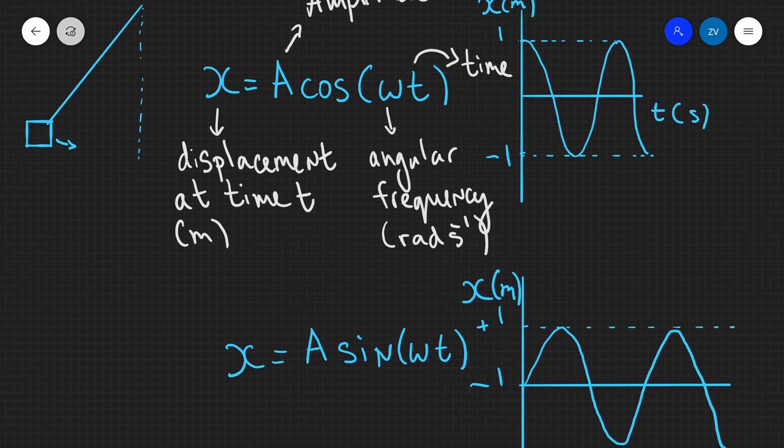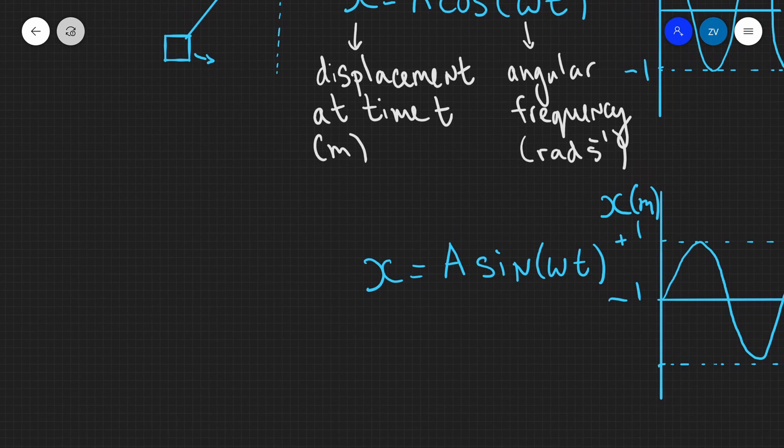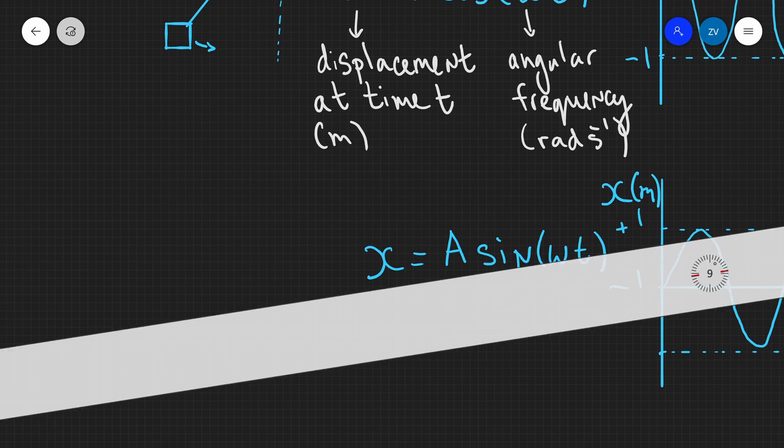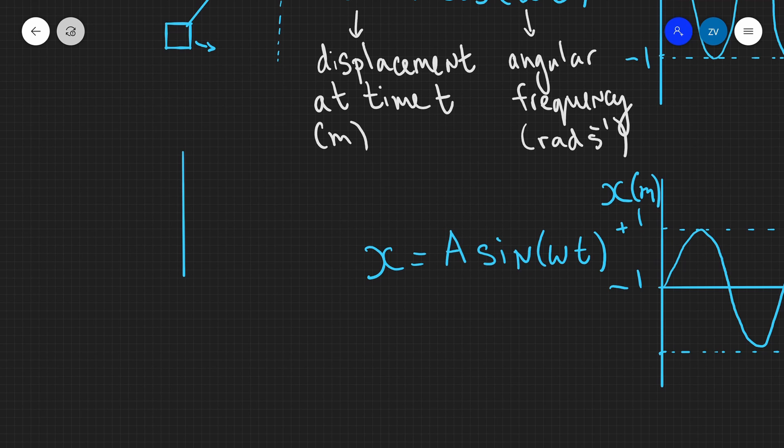Now if we have exactly the same situation, however we start our pendulum, or we give our pendulum a push when it's at the balance point. So let's say that at t equals zero, our pendulum is there.